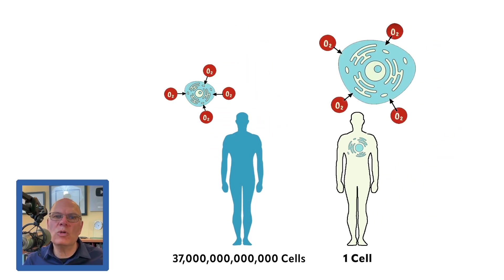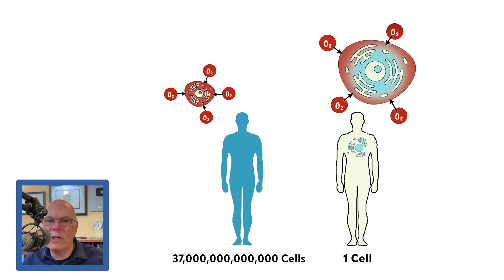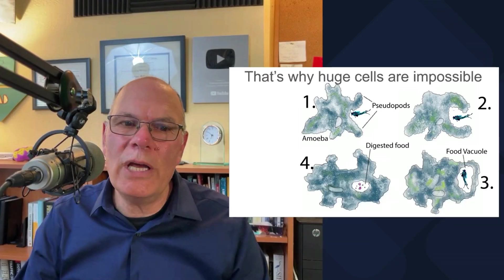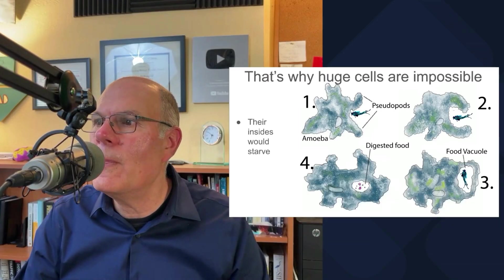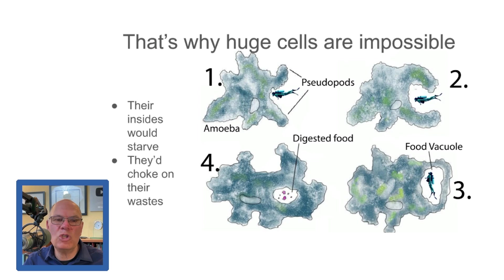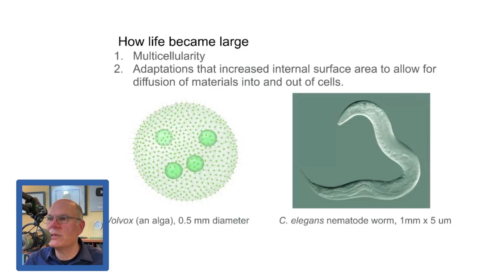Cells are small in order to give them enough surface area to volume so that they can exchange things by diffusion. That's why huge cells are impossible — their insides would starve and they would choke on their wastes.